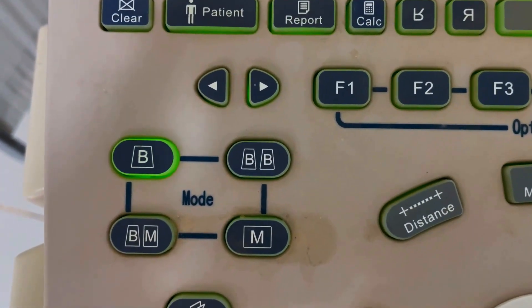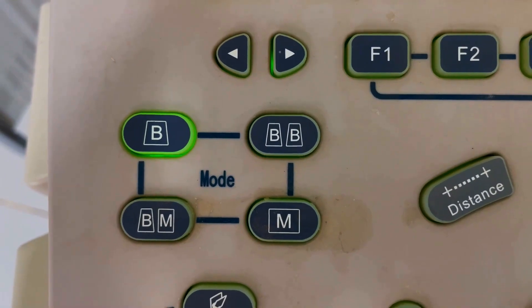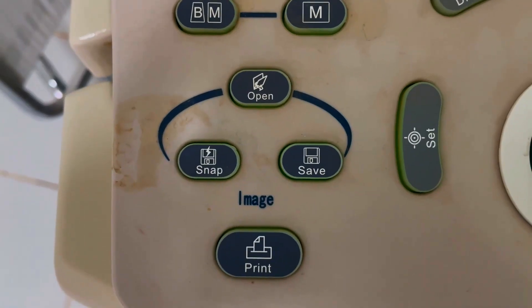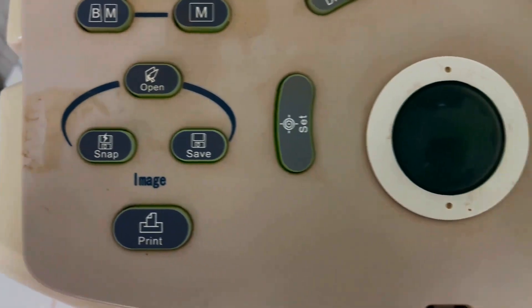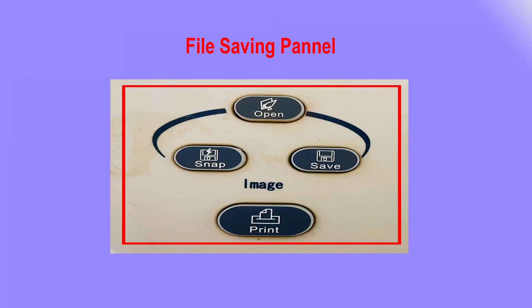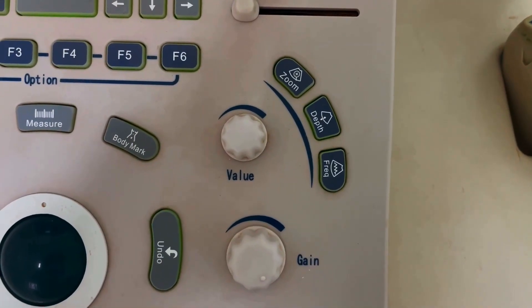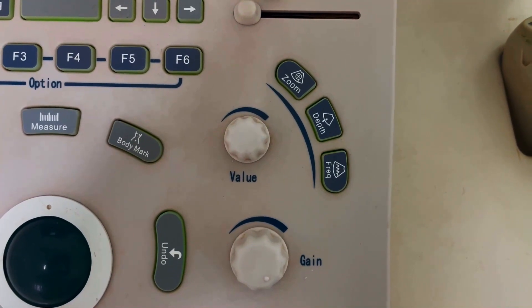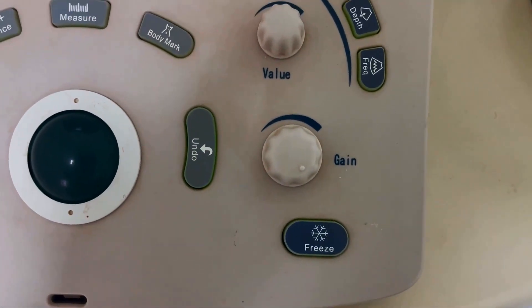This one is the parameter measuring panel. This one is the different view mode panel. This one is the file saving panel. This one is the gain, zoom, depth, and freeze panel.